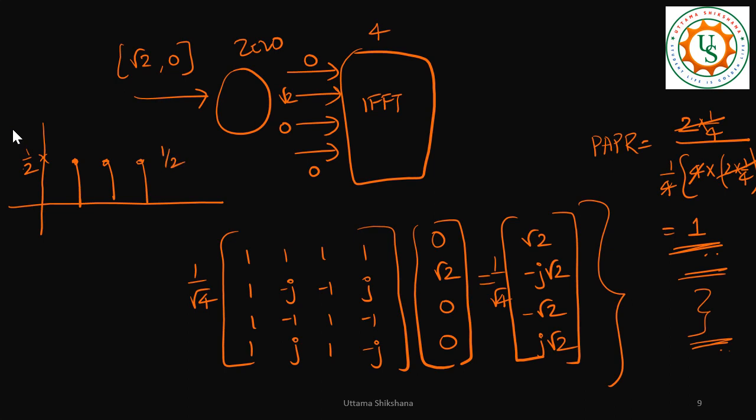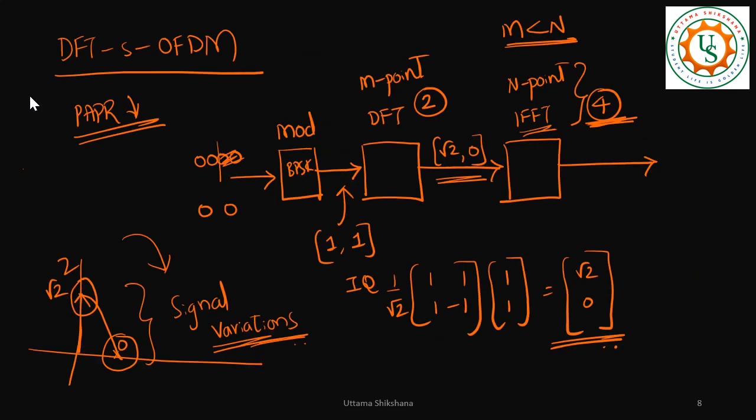So if you see here, the signal variations are less. That's what happened, right? Because in the earlier case, after IFFT we saw that the signal variations were more. Like the first sample was having a power of 2, the second sample almost went to 0, so the variation was high.